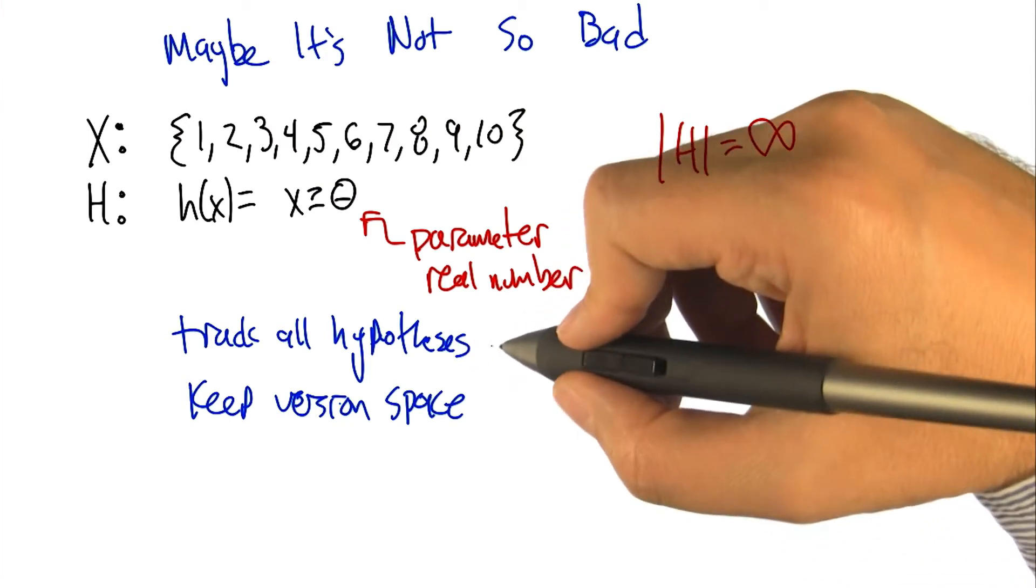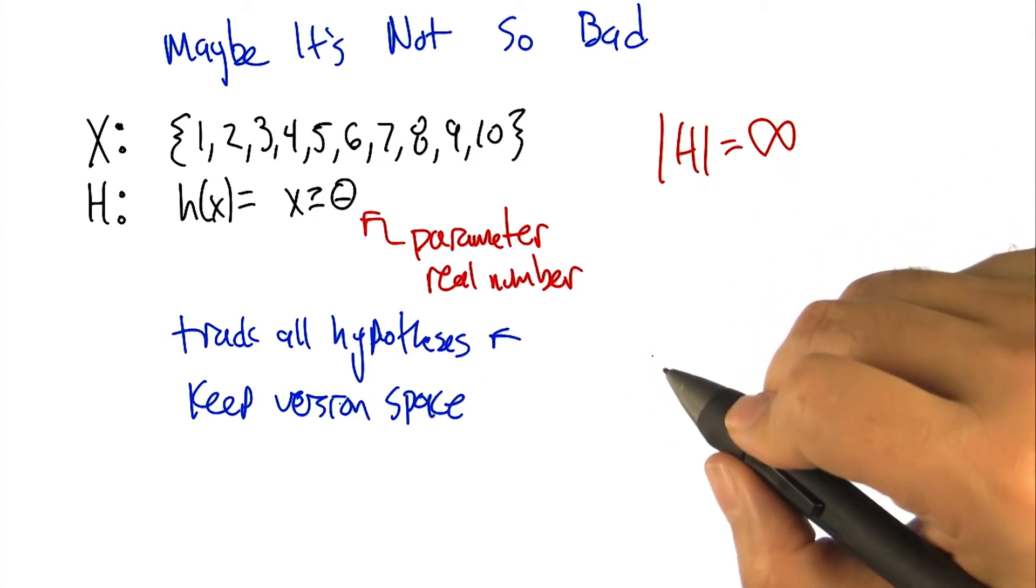So, what can we possibly do to track all these hypotheses? It's problematic because there's an infinite number of them.